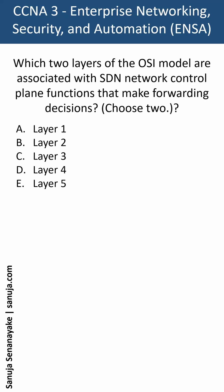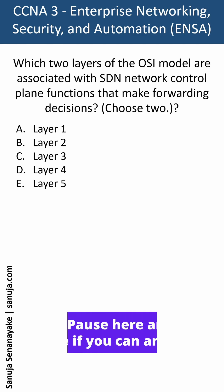Which two layers of the OSI model are associated with SDN network control plane functions that make forwarding decisions? Choose two. The answers are layer 1, layer 2, layer 3, layer 4, and layer 5.